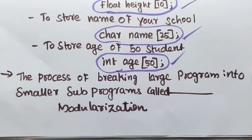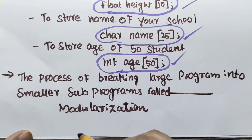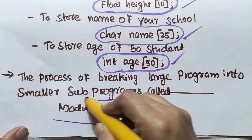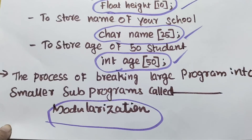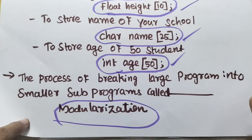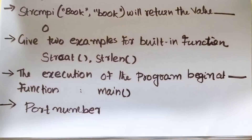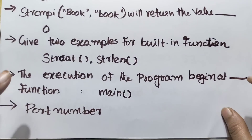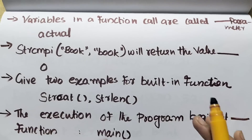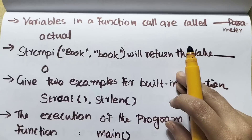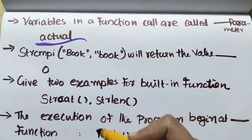The process of breaking a large program into smaller sub-programs is called modularization. This is a three-mark or five-mark question. Variables in a function call are called actual parameters.